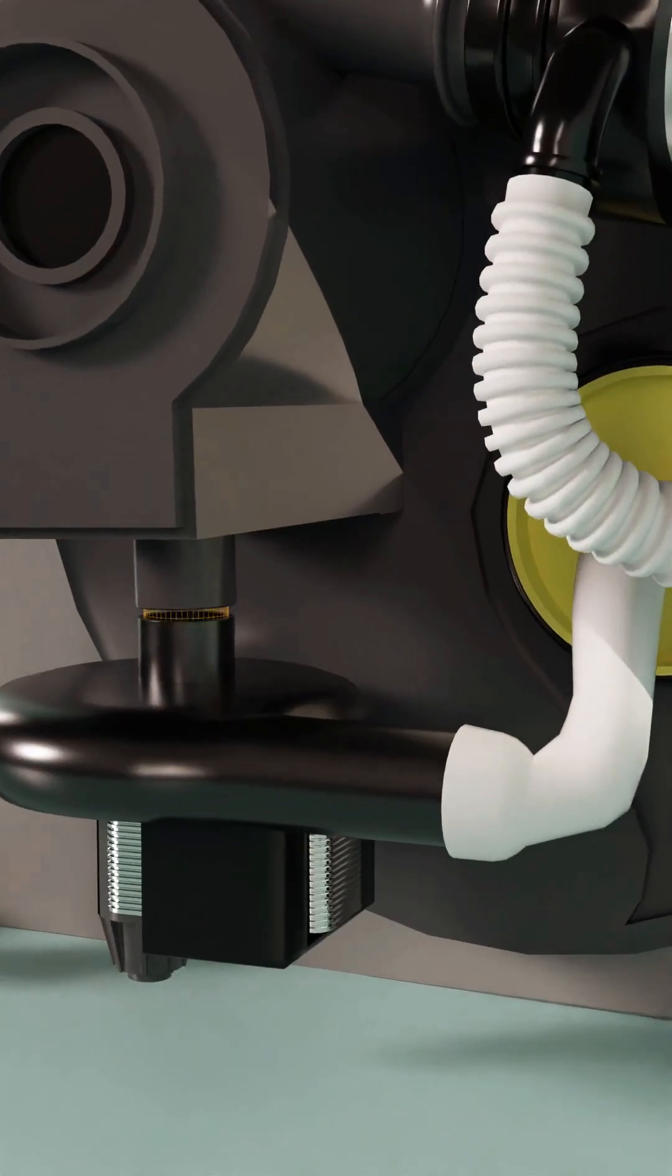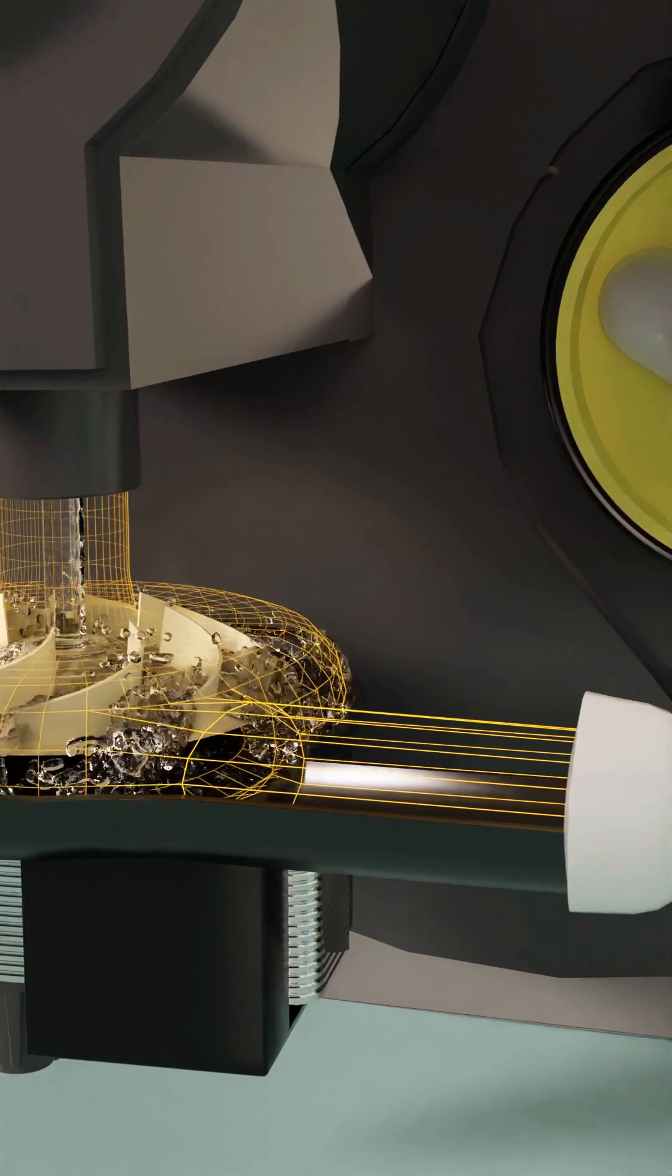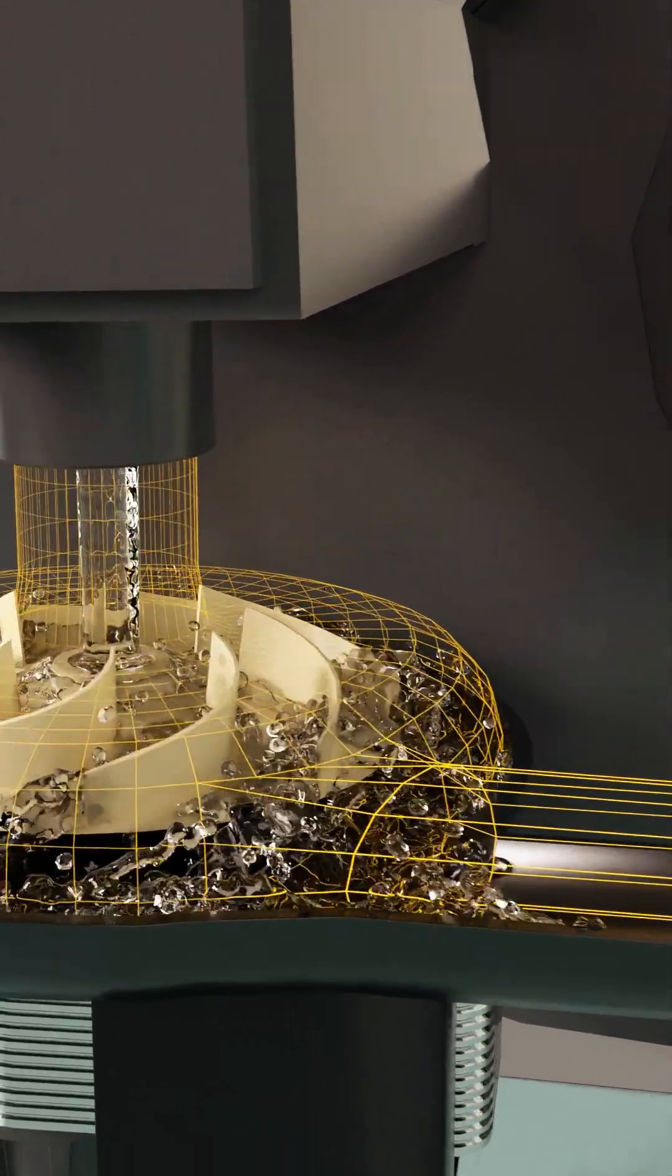Beneath the dishwasher, the circulation pump springs into action. At the heart of this pump is a rapidly spinning impeller designed to generate a powerful suction.